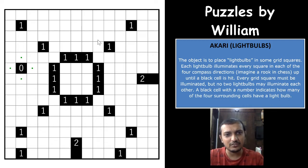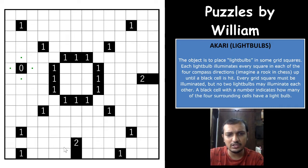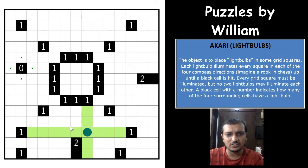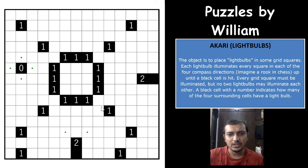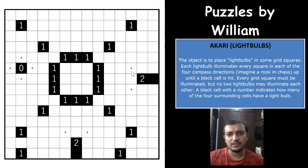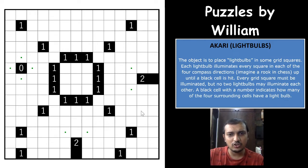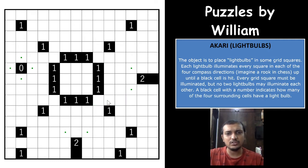The basic technique I covered in my earlier video is the diagonal logic. If you have a two and only three available cells, the diagonal cells cannot have a light bulb — if those diagonal cells had light bulbs, only one cell would remain for the two, which is not possible. So those diagonal cells are always eliminated.